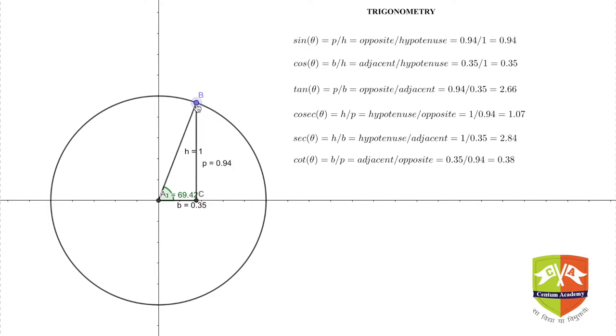Simultaneously, if you see the perpendicular height, it is also increasing - 0.92, 0.93, 0.94 - and the base is also decreasing. Point C is coming closer to A, point B is going towards the y-axis.